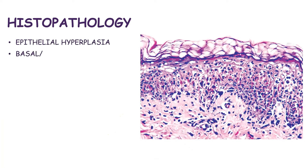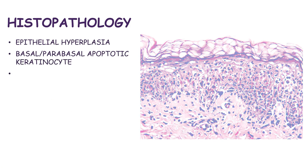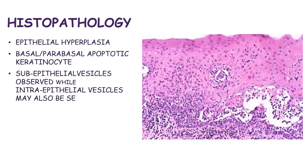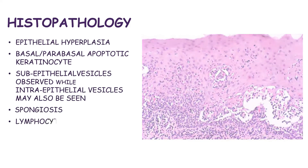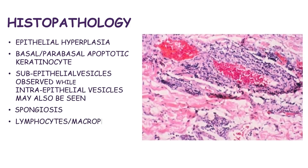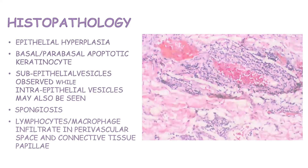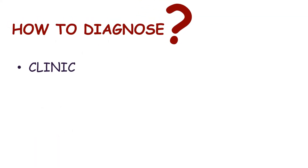Histopathology reveals epithelial hyperplasia, basal and parabasal apoptotic keratinocytes, and sub-epithelial vesicles, while intra-epithelial vesicles may also be seen. Spongiosis and a lymphocyte-macrophage infiltrate in the perivascular space and the connective tissue papillae are also observed. Diagnosis is based mainly on the clinical presentation of the patient.